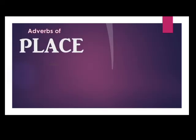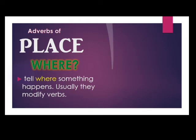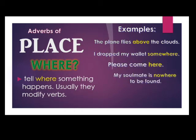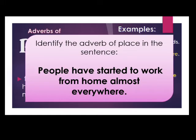The third type is the adverb of place. Adverbs of place tell where something happens and usually modify verbs. For example: 'The plane flies above the clouds.' 'I dropped my wallet somewhere.' 'Please come here.' 'My soulmate is nowhere to be found.' 'Just put my book there.' Above, somewhere, here, nowhere, and there are all examples of adverbs of place — they tell location, just like what prepositions do. Now, identify the adverb of place in the sentence: 'People have started to work from home almost everywhere.' The answer is 'everywhere.'